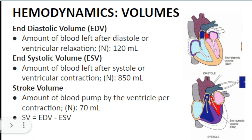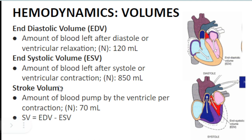Now for key volumes: end systolic volume (ESV) is the amount of blood left in the heart after contraction — normally 50 mL. End diastolic volume (EDV) is the amount of blood inside the heart during relaxation, before contraction — normally 120 mL. Stroke volume is the amount of blood pumped per contraction, calculated as EDV minus ESV, giving a normal value of 70 mL (120 minus 50).